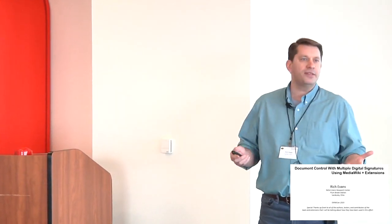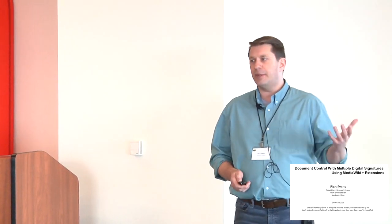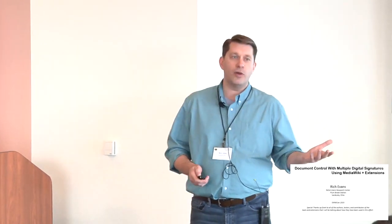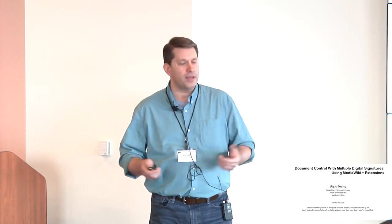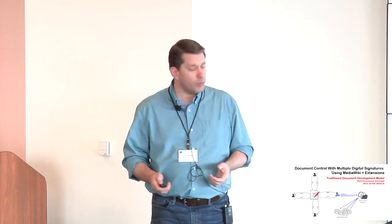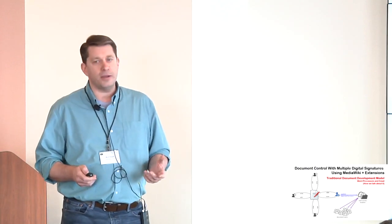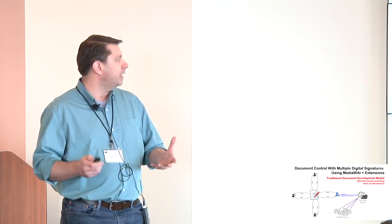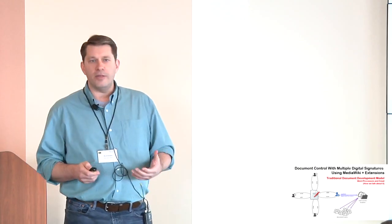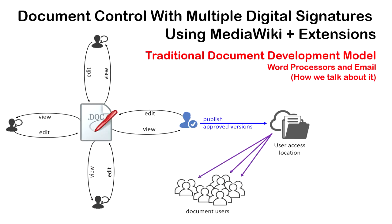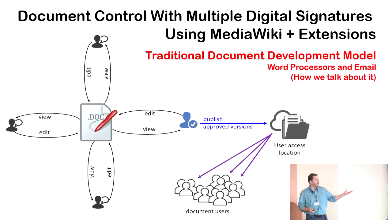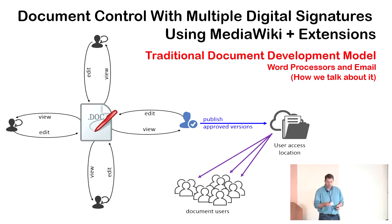One of the things that nobody wants is for these documents to be uncontrolled, so version control for these types of things is critical. When we begin with the document development process, there's a product we want to develop. We pick some people to be in charge of its development, and at the end of that process it's published to a common access point where all users benefit from the developed document.